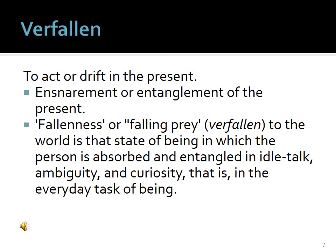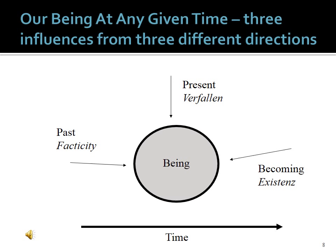So at any given time we have three influences from three different directions. We have the past, or what Heidegger called facticity. We have the present — verfallen — the things happening in the here and now. And then we have existence, our becoming. All the time this is a moving target; we're moving forward in time and these circumstances are changing.